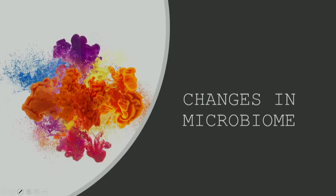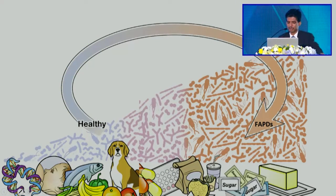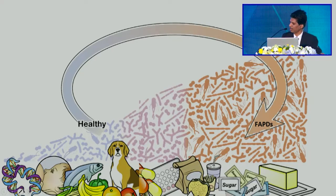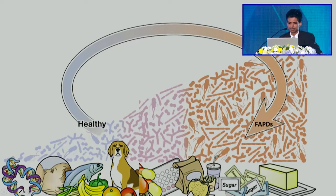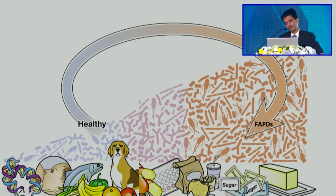Now regarding changes in microbiome: on the far side you can see the blue normal microbiome — what we had with genetics, breastfeeding, natural food, and living with animals. When you start taking antibiotics and other drugs and consuming junk food, the microbiome becomes unhealthy. If you continue this over a few years, the microbiome does not just become unhealthy — it becomes absolutely pathogenic and pathologically oriented.